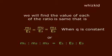We will find that the value of each of the ratios is the same, that is, M1/E1 = M2/E2 = M3/E3 when Q is constant, or M1 : M2 : M3 = E1 : E2 : E3.